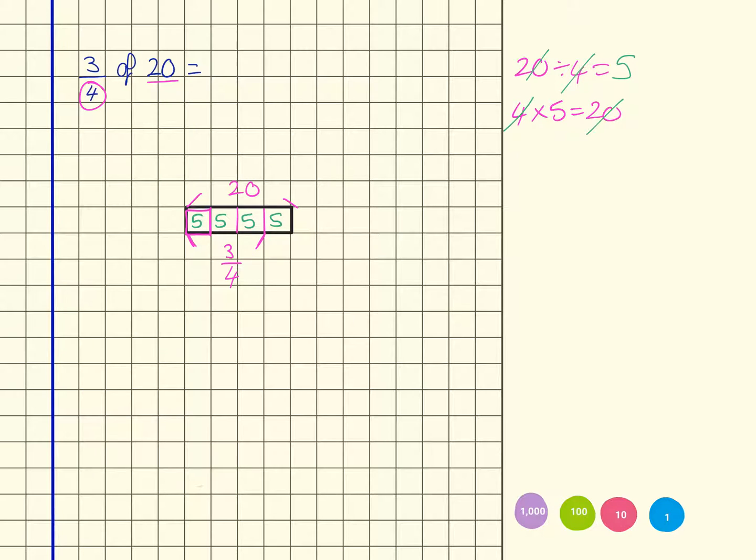So each one of these is worth five. And if I count in piles I can check that: five, ten, fifteen, twenty. Now that tells me that if I've got three of those, that's five, ten, fifteen. So that equals 15.